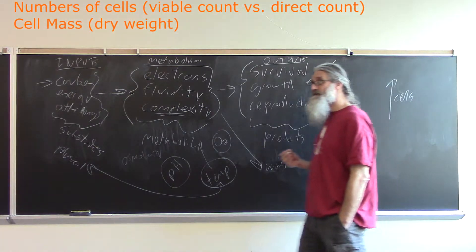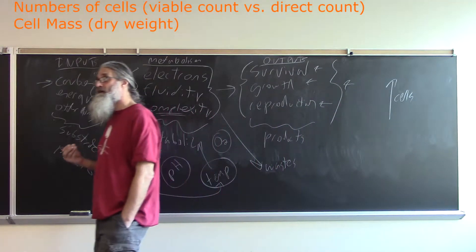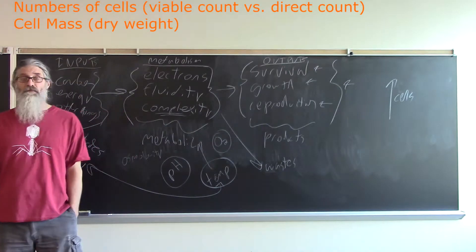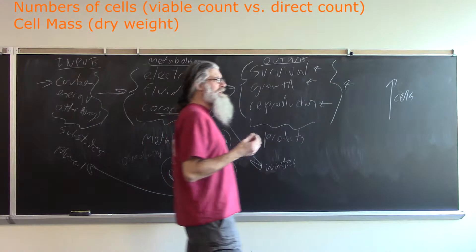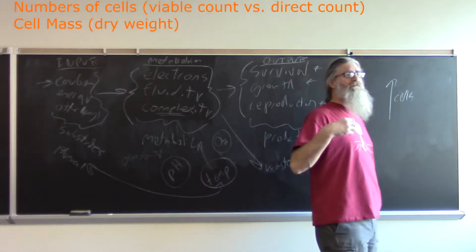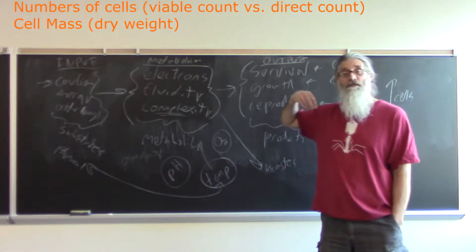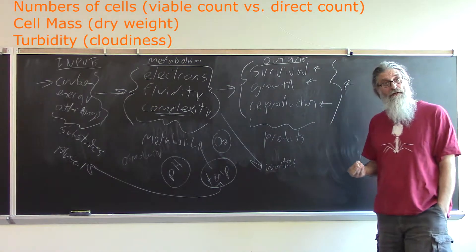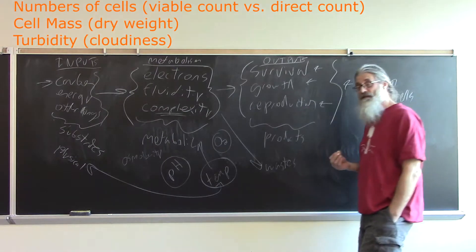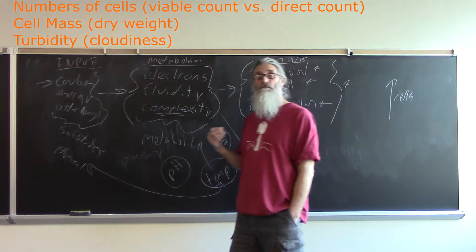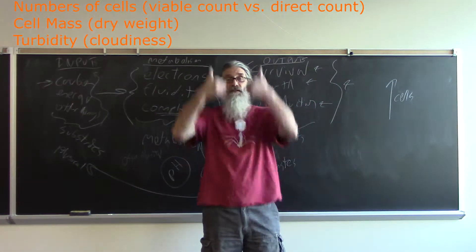The more cells that you have, the greater their collective ability to scatter light. Each cell has a certain amount of turbidity associated with it. The more cells you have present, the greater the cloudiness—the greater the turbidity of the culture.